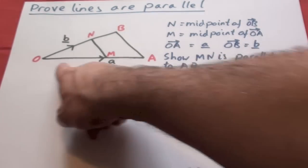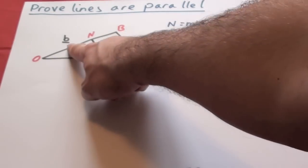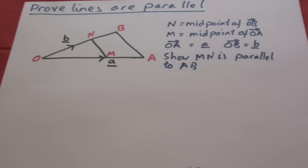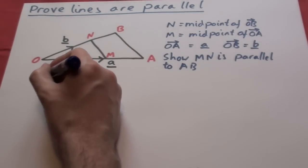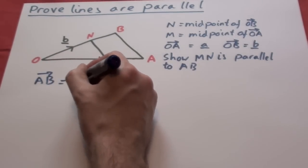We want to find out that N, M is parallel to AB. We've got B, we've got A in those directions. Those are our two lines we have to show are parallel. N is the midpoint of OB, M is the midpoint of OA. OA equals all of vector A and OB equals vector B.